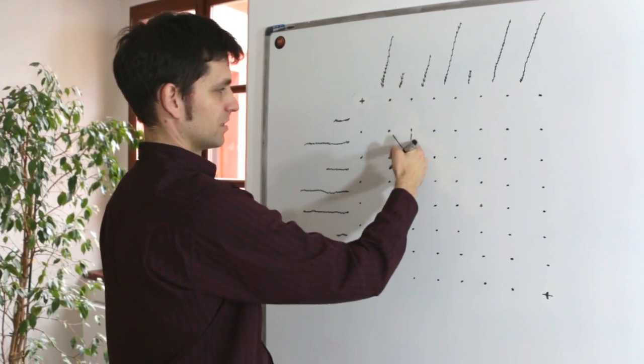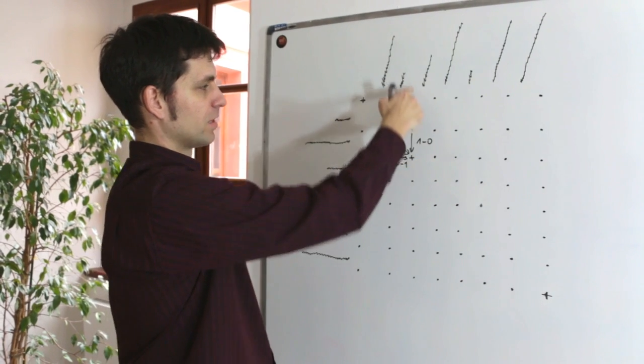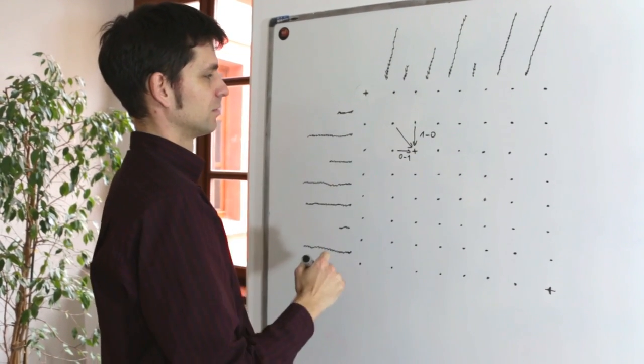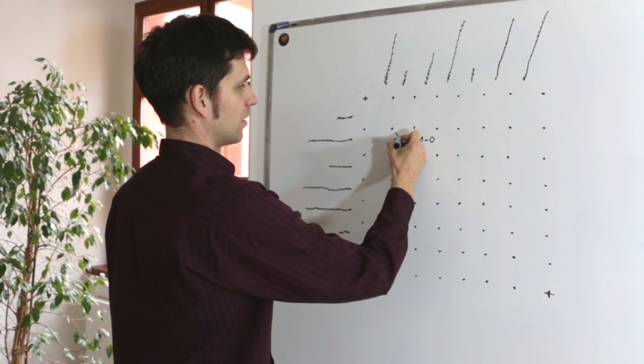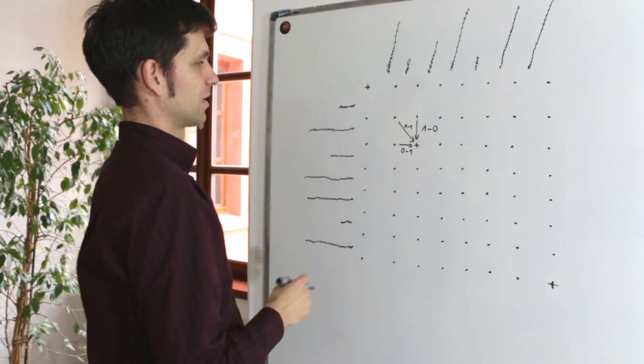This arrow is the deletion. We have traversed one sentence in the source and we haven't produced any sentence in the target. And this arc is the one to one alignment when these two sentences match exactly.